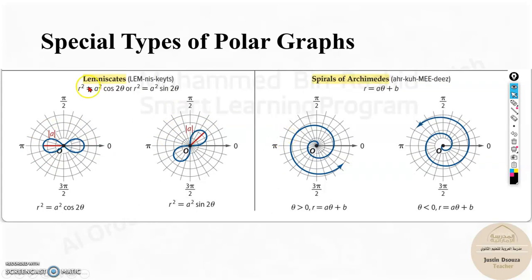And then lemniscate and spiral of Archimedes. Lemniscates are like this, with the standard form of r squared equals a squared cos 2 theta, or r squared equals a squared sin 2 theta. And the graph is similar to this. And last one, spiral of Archimedes. It's a spiral. The standard form is very simple: r equals a theta plus b. The pronunciation is given as Archimedes. And this is how it looks.